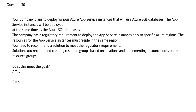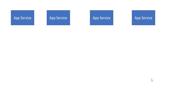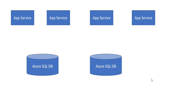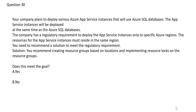First, understand the story and identify the keywords. The question goes this way: you have various app services and databases on Azure SQL DB, and these need to be deployed on specific locations — for example, US East and Singapore. The requirement is that app service instances and all related resources, such as the database, should reside in the same region.